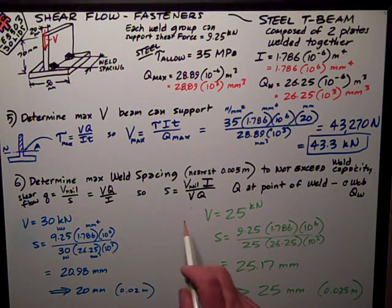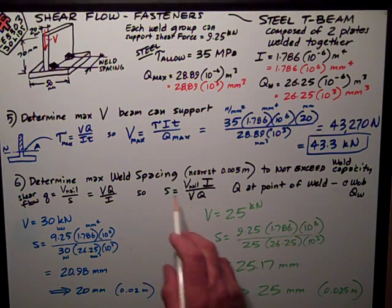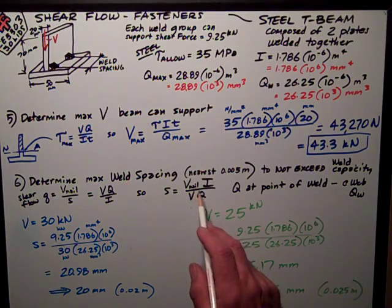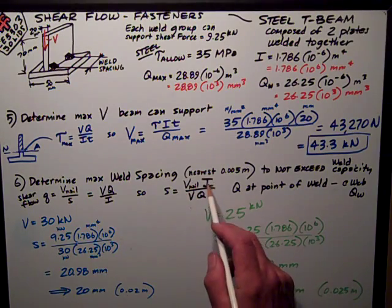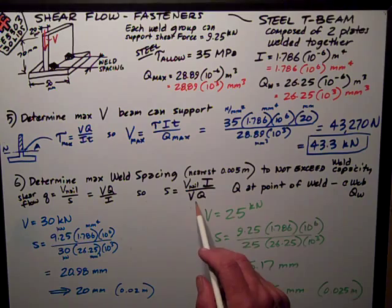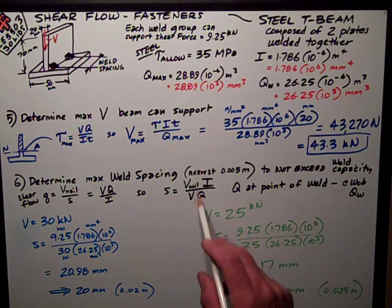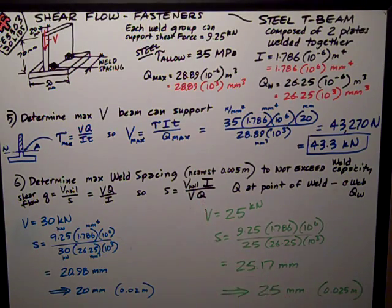So I can rearrange this equation, and I can get that the spacing S is equal to the V per nail, or in this case weld group, times I divided by V, the shear force on the section, divided by Q.